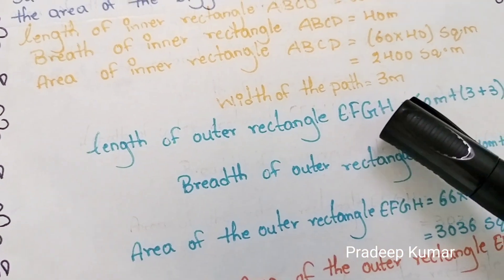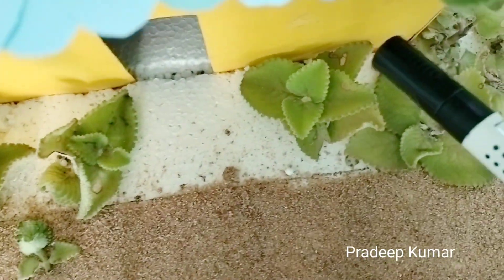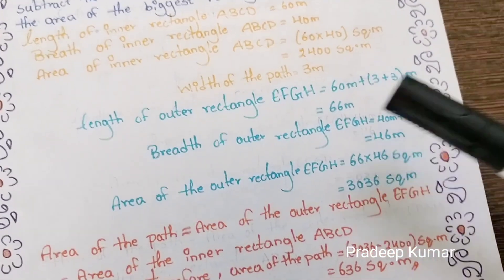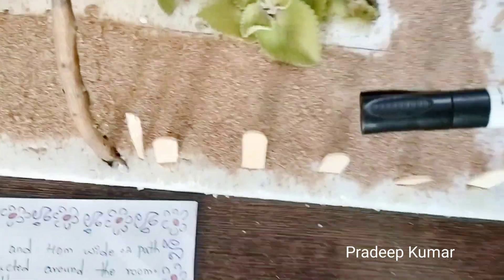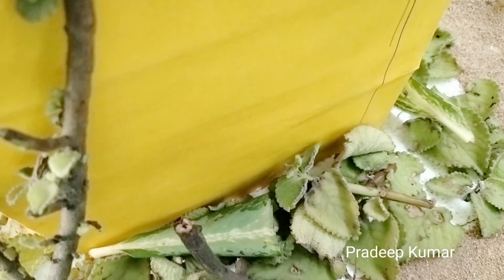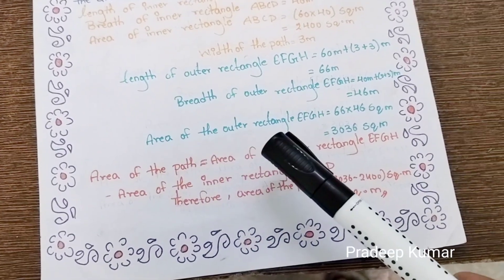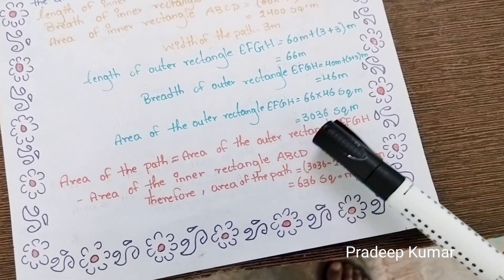Width of the outer rectangle EFGH: the path adds 3 meters on each side, so the length becomes 60 plus 3 plus 3, which is 66 meters. Width of the outer rectangle EFGH is equal to 40 plus 3 plus 3, which is 46 meters. Area of the outer rectangle EFGH is equal to 66 into 46, which is 3036 square meters.